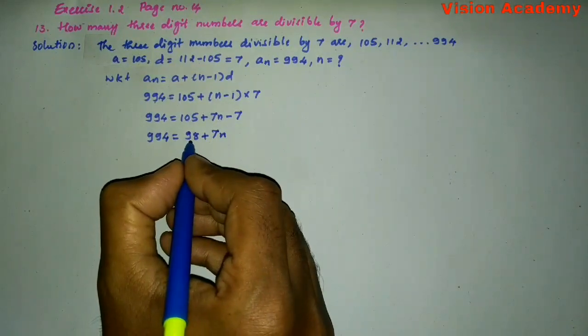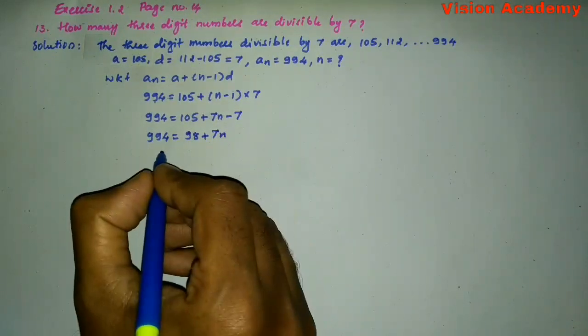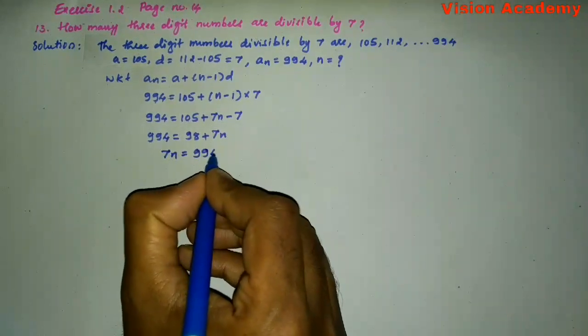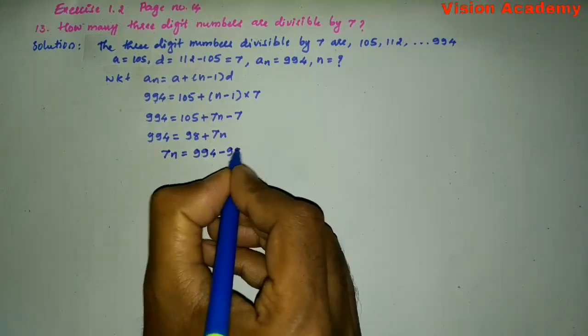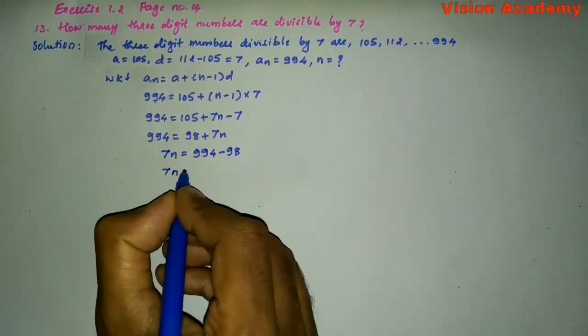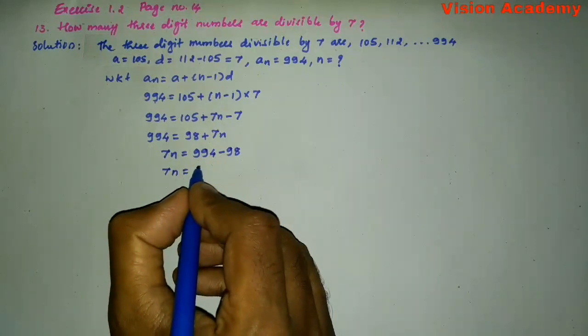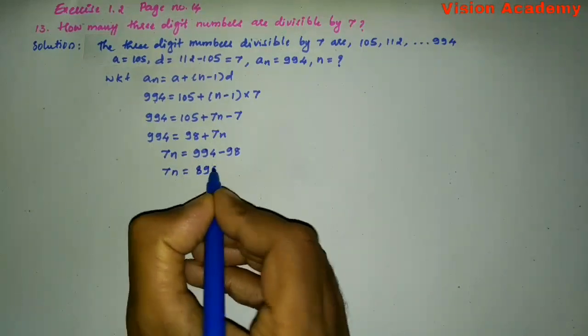Let us transform this 98 from RHS to LHS. Here, 7N = 994 - 98. So 7N = 896.